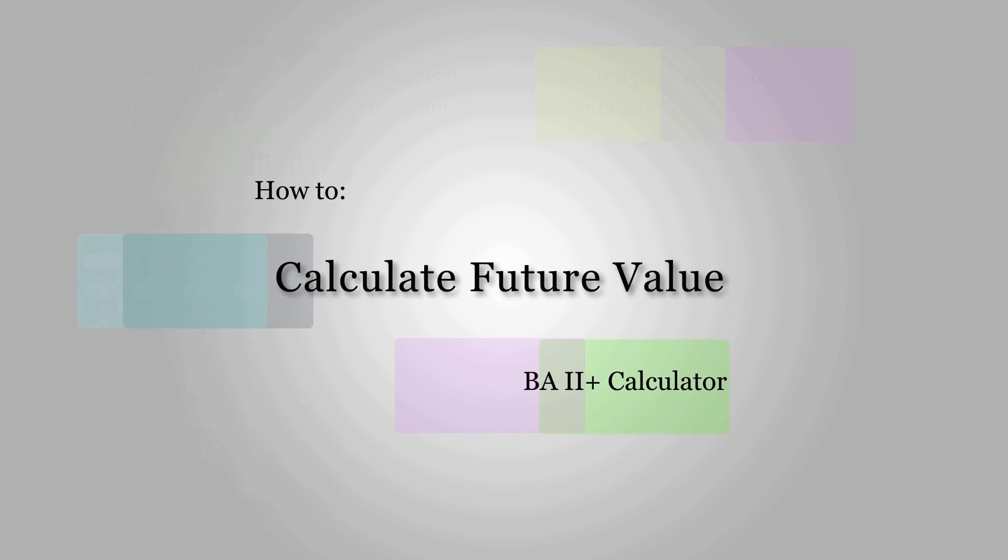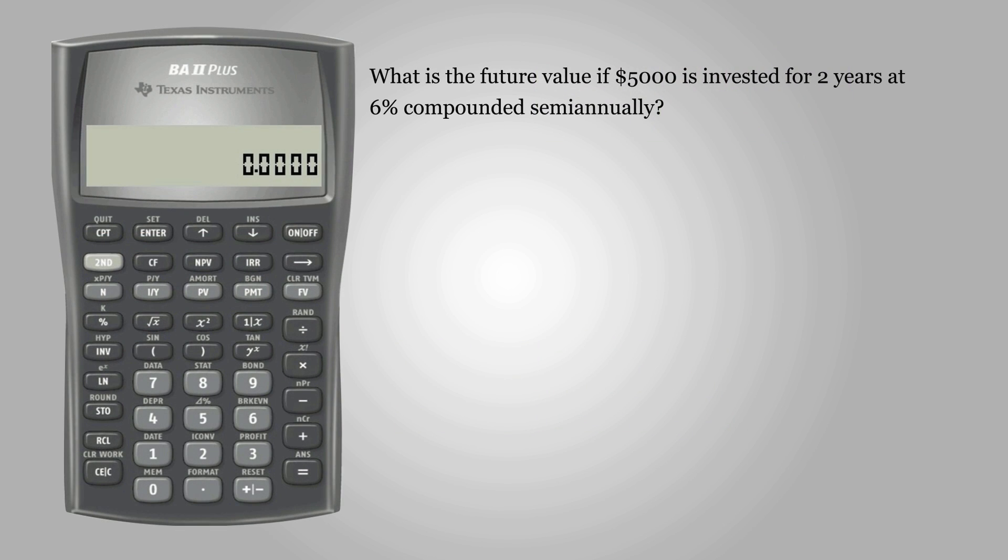In this video, we learn how to calculate future value using BA2+. The question asks: what is the future value if $5,000 is invested for 2 years at 6% compounded semi-annually?